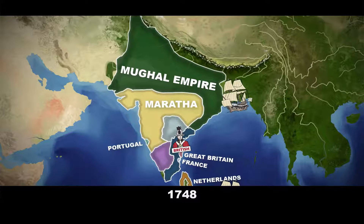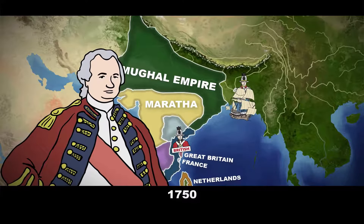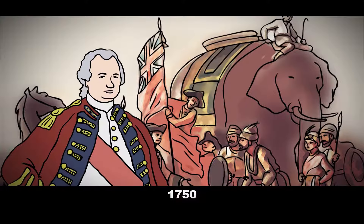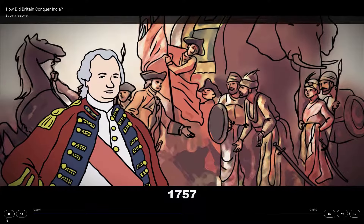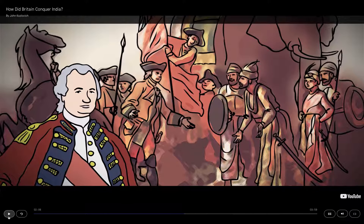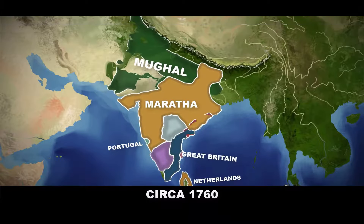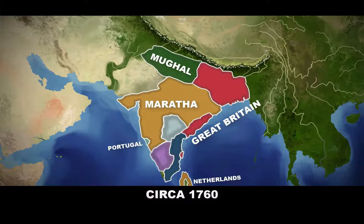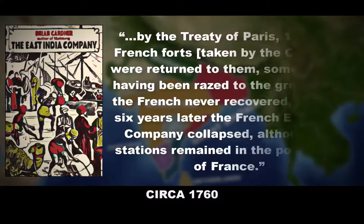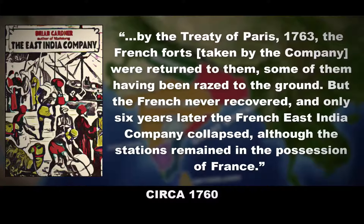Of all the Europeans established in India, the British and French in the south were now preeminent. Under the daring Robert Clive, the British East India Company's army defeated both the Bengalis and their French allies at the Battle of Plassey during the Seven Years' War — which you would more recognize as the French and Indian War — the broader global war between Great Britain and France that was going on simultaneously in India as well. By the 1760s, this allowed the British to assert control over much of the Indian subcontinent through direct territorial possession or indirect tributary arrangements. By the Treaty of Paris of 1763, the French forts were returned, but the French never recovered, and six years later the French East India Company collapsed.